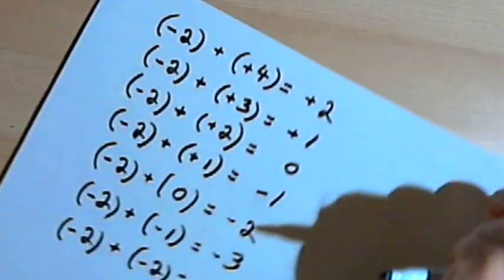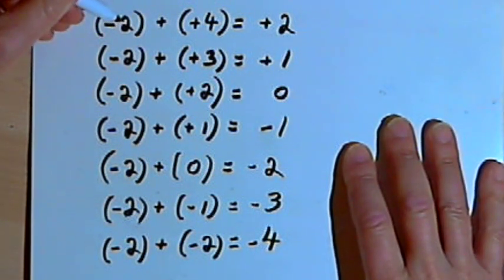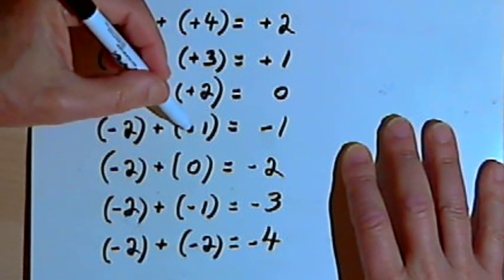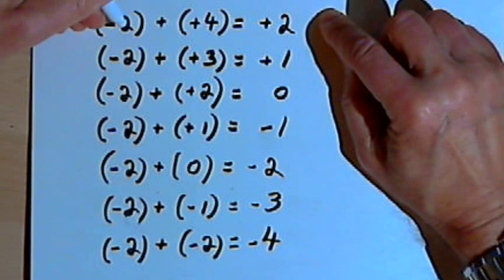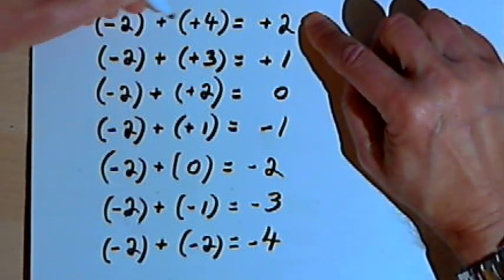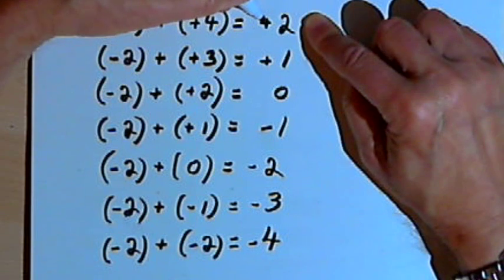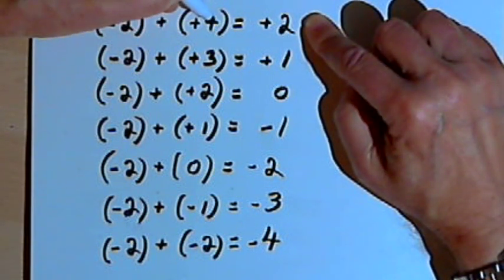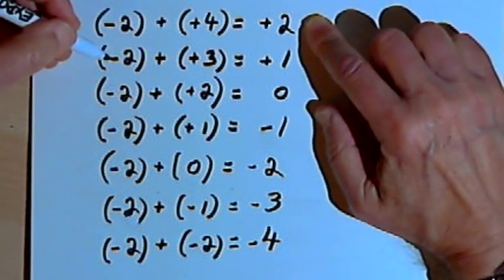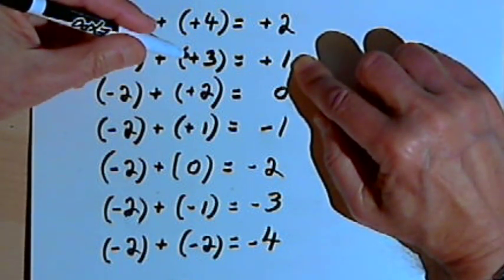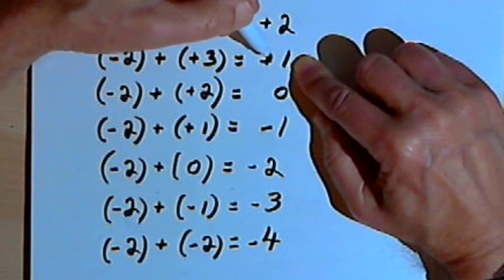Let's look at one more page of addition. In this case I want to start out with a negative number — negative 2 — and add positive 4, positive 3, positive 2, positive 1, decreasing by 1 each time. Negative 2 plus positive 4: the signs are different, so I take the sign of the number with the larger absolute value, which is 4, giving a positive sign, and take the difference: 4 minus 2 is 2, so positive 2. Same with negative 2 plus positive 3 — positive sign because 3 is greater than 2, and the difference is 1, so positive 1.